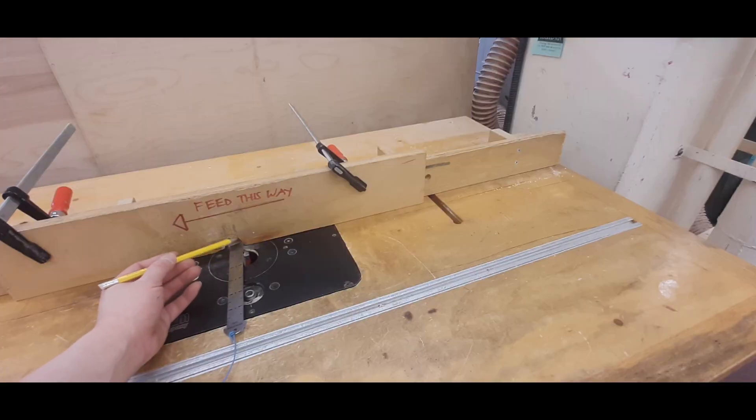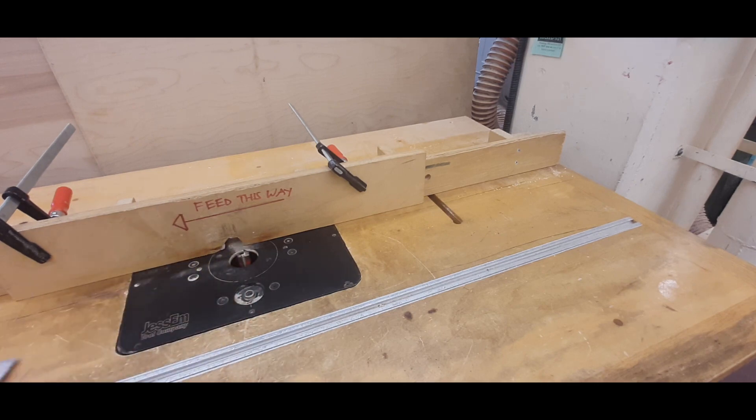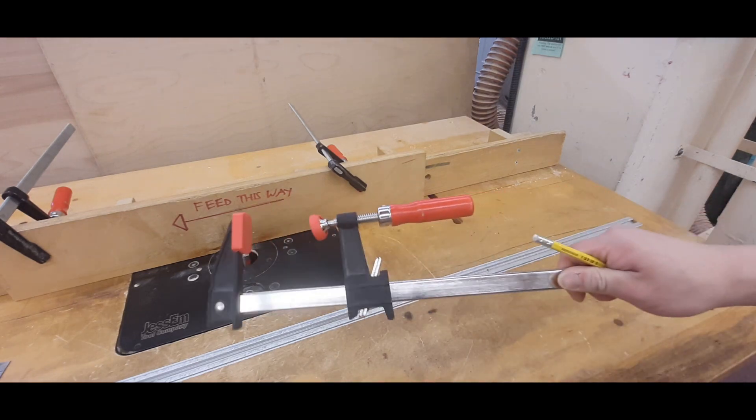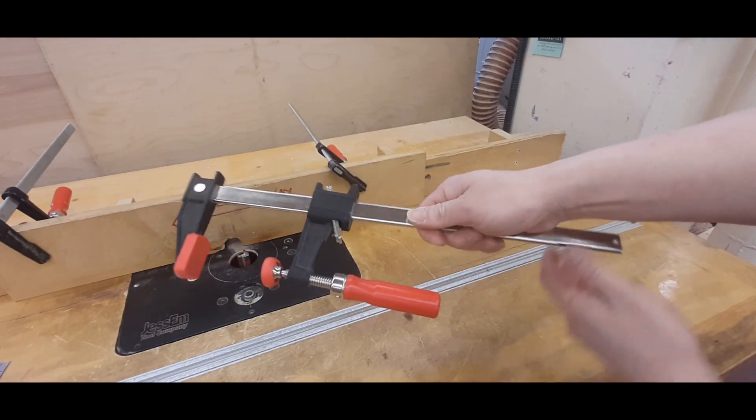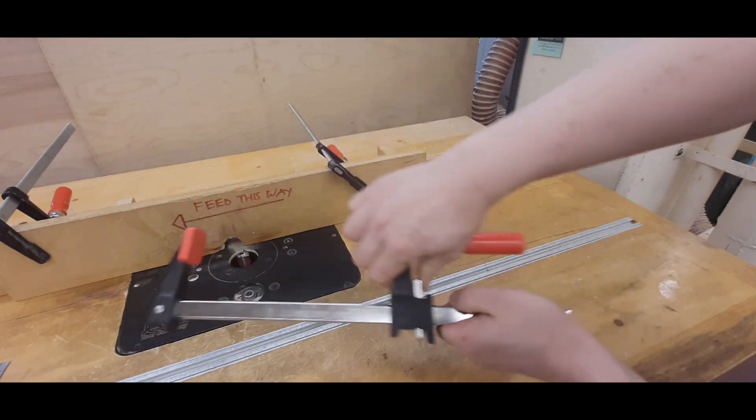Once the router bit is the correct distance away from the fence, we're just going to get rid of our ruler. And it's time to grab our clamp and clamp this section. So you grab your clamp, pull the silver ratchet back.